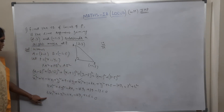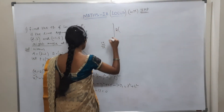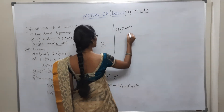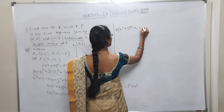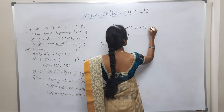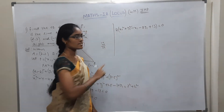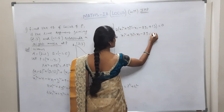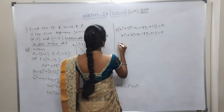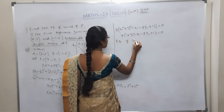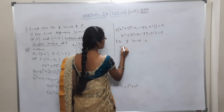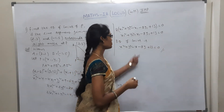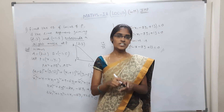Taking 2 as common factor: x1²+y1²−x1−8y1+13 = 0. So the equation of locus is x²+y²−x−8y+13 = 0. This is a very important result. Please subscribe, share, and like the channel.